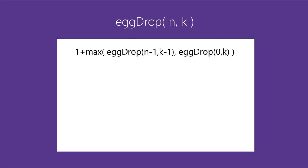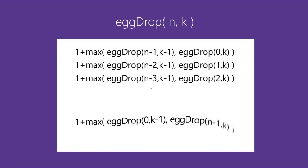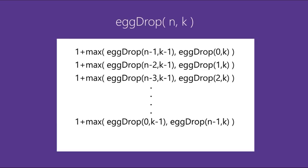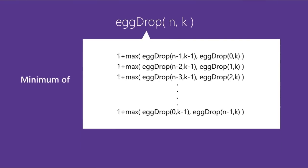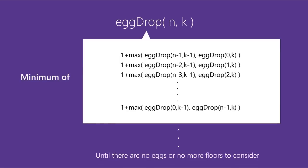Similarly for each floor we do the same until we reach the bottom, where we get 1 + max(egg_drop(0, k-1), egg_drop(n-1, k)). The main function returns the minimum of all these values. All of these keep recursively calling their subproblems until there are no eggs or no floors left — those are the base cases. Another base case: when we have only one egg left, the value returned equals the number of floors, since we drop it from each floor starting at the bottom.